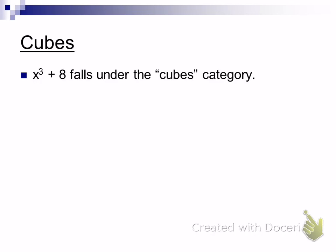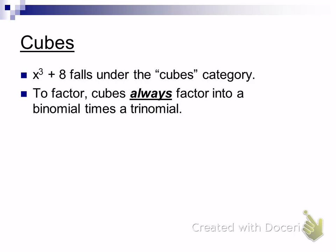Does anybody remember the process of factoring cubes? There's a pattern to this one. These are really easy if you know the pattern, but next to impossible if you don't. Cubes will always factor as — and this is the starting point — a binomial times a trinomial. That's the grid we've got to fill in: a binomial and a trinomial. So we've got 5 blanks to fill in and 3 signs. If you were forced to guess what two things would go in the binomial, what would you say?